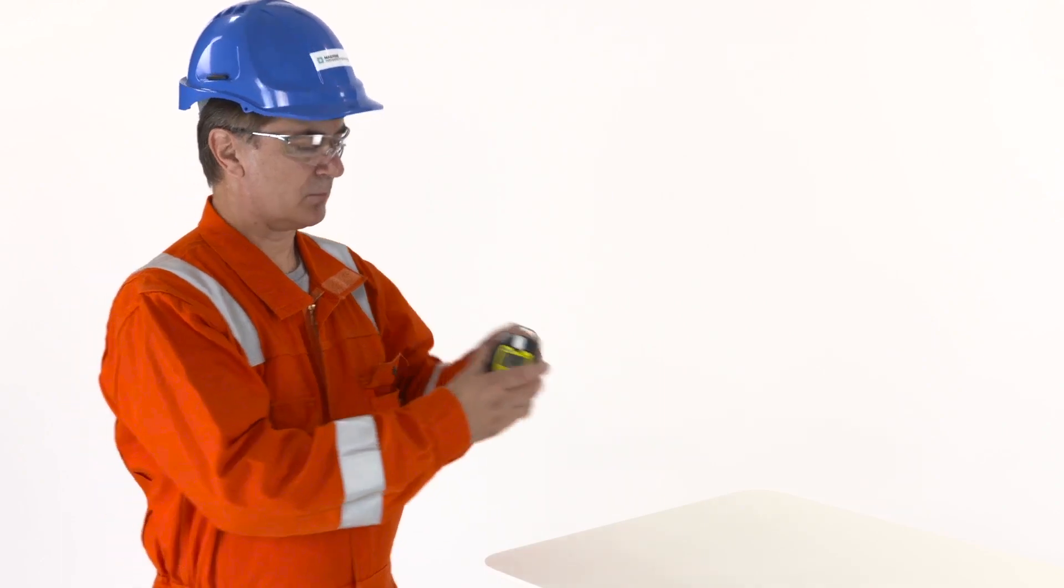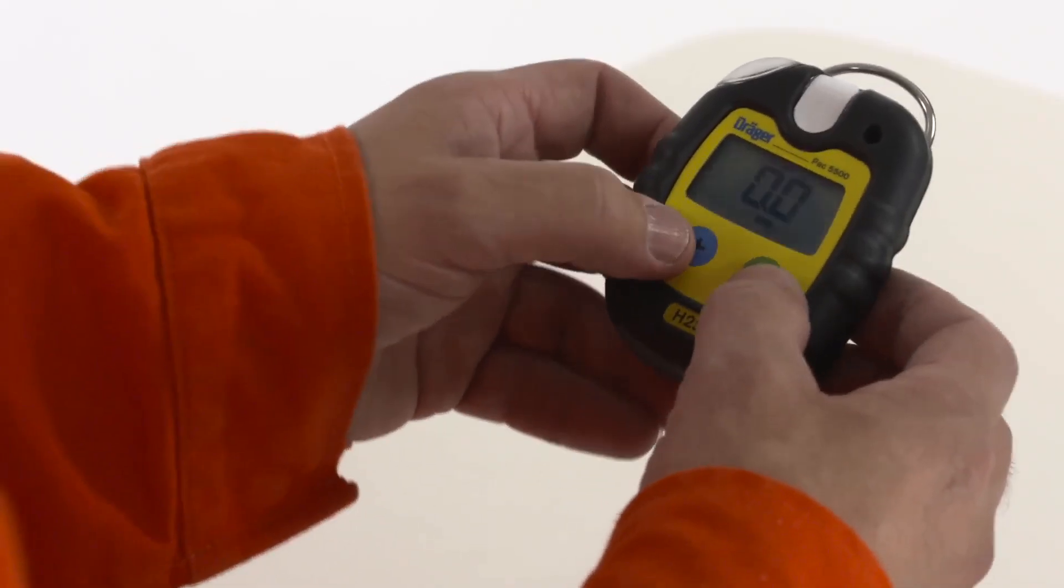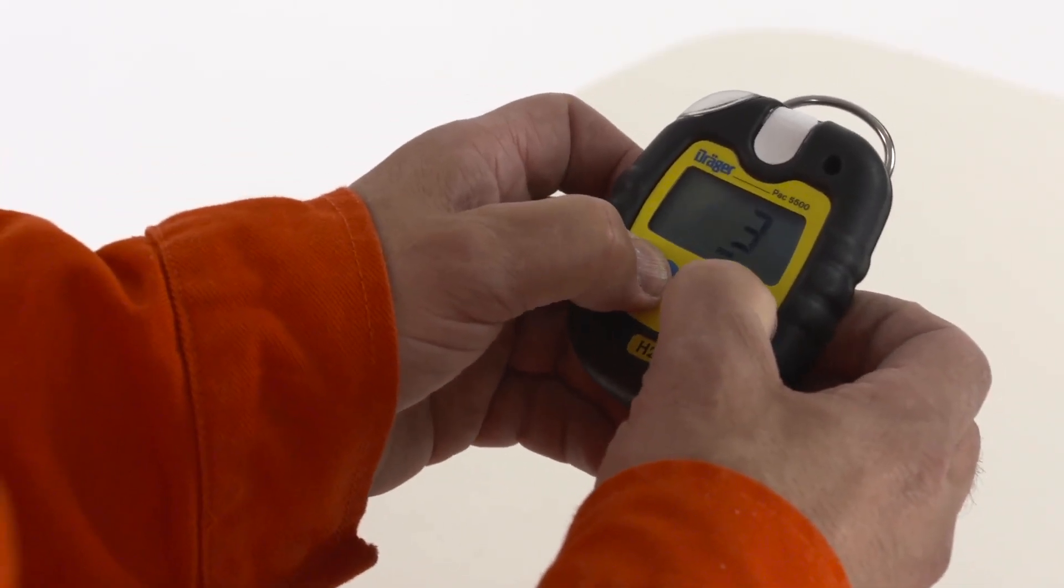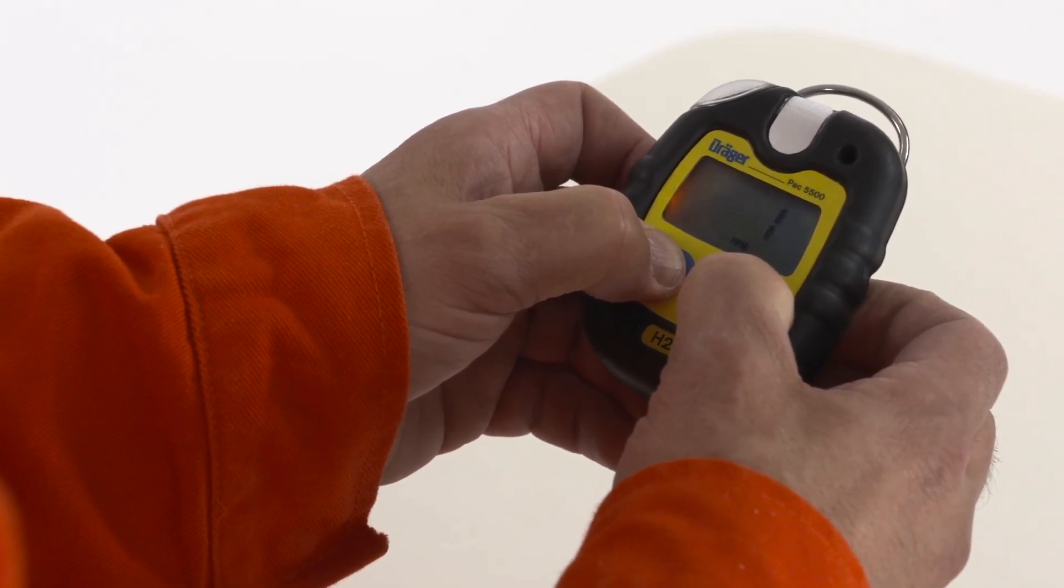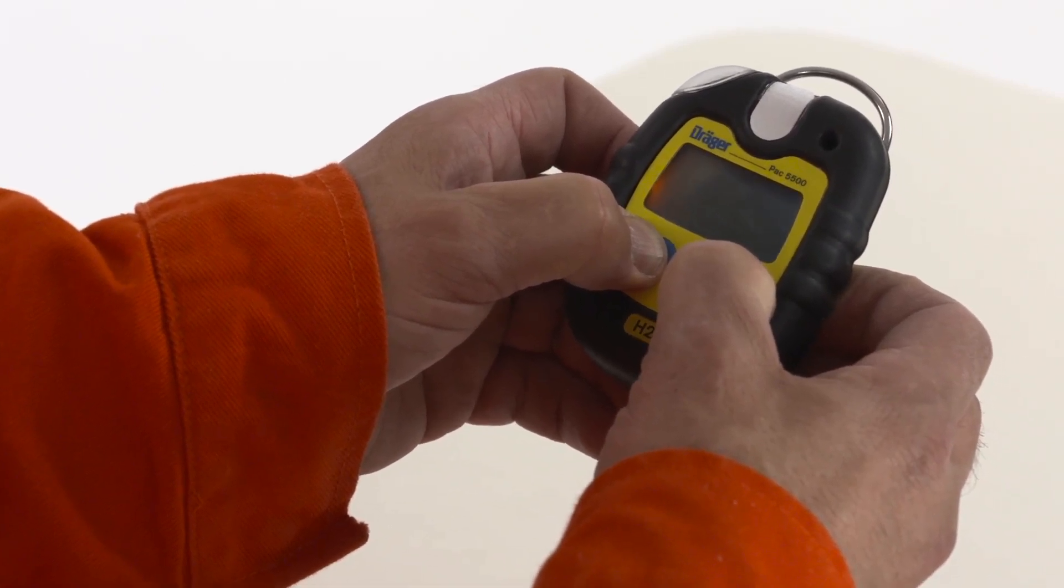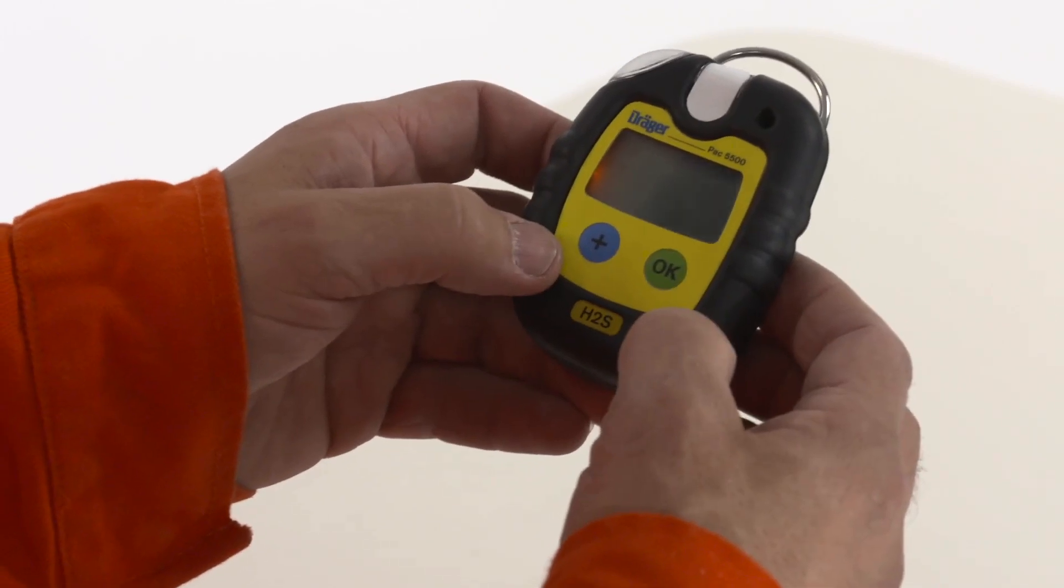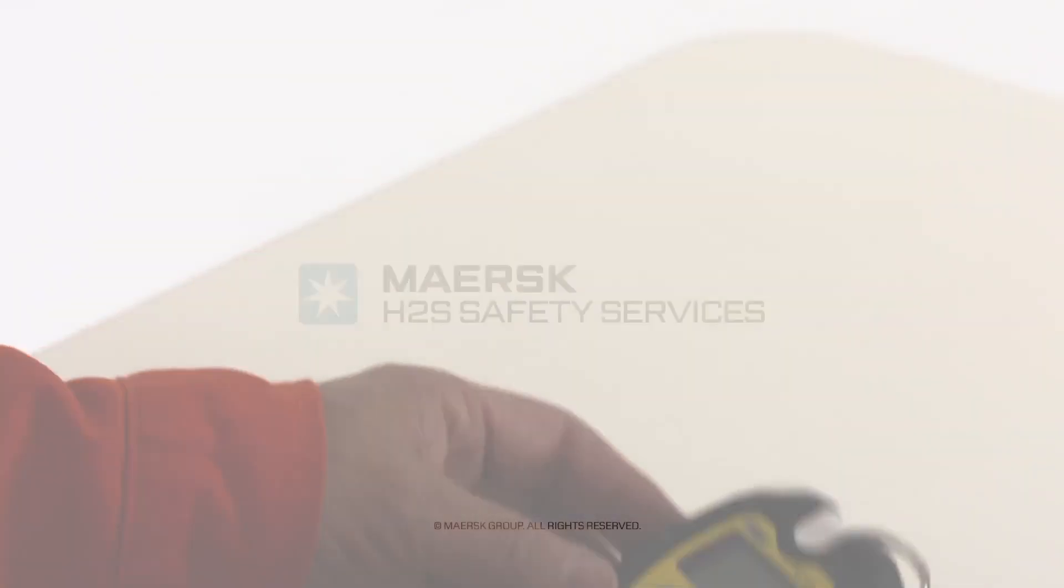To turn off the monitor, press both the OK and plus keys simultaneously for 3 seconds until the audible alarm and LED are activated, indicating the detector is off. Hand back the detector to the Maersk supervisor according to procedure on site.